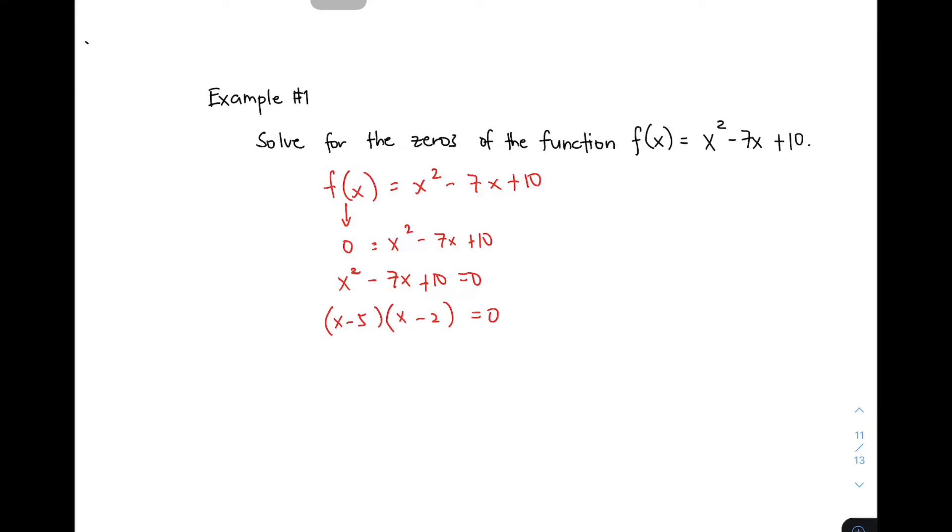After that, you need to equate each factor by zero. We have x - 5 = 0 and x - 2 = 0 because we need to solve for the value of x. You have x = 5 and x = 2. How come na naging 5 and 2? We have here negative 5. When you transpose negative 5 to the other side of the equation, that will give you positive 5. Same with negative 2. When you transpose it to the other side, it will become positive. And right now, these are the zeros of the function. The zeros of f(x) = x² - 7x + 10 are 5 or 2.